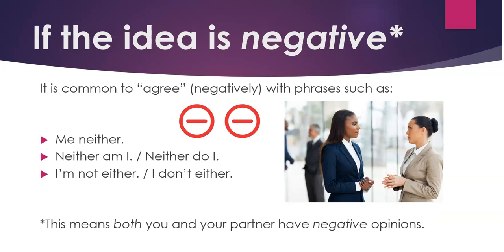If the idea is negative, it is common to agree negatively with phrases such as: Me neither, Neither am I, Neither do I, I'm not either, I don't either. This simply means that both you and your partner have negative opinions.